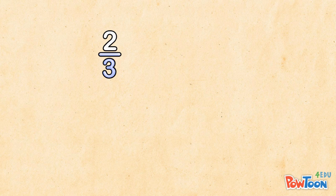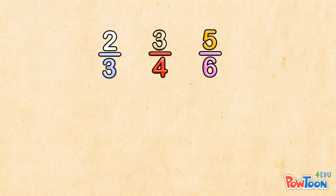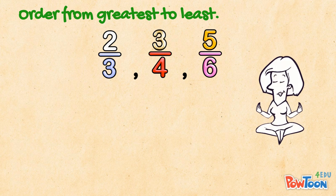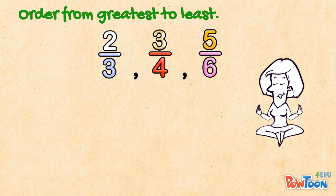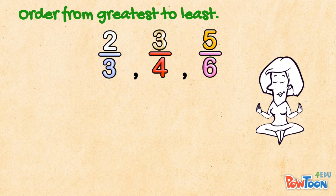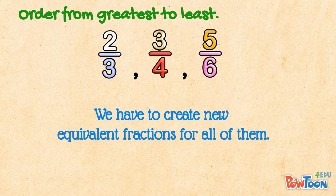2 thirds, 3 quarters, and 5 sixths. We have to order them from greatest to least. Step 1, check the denominators. 3, 4, and 6. They won't work together because 4 is not a factor of 6. We're going to have to create new equivalent fractions for all of them.